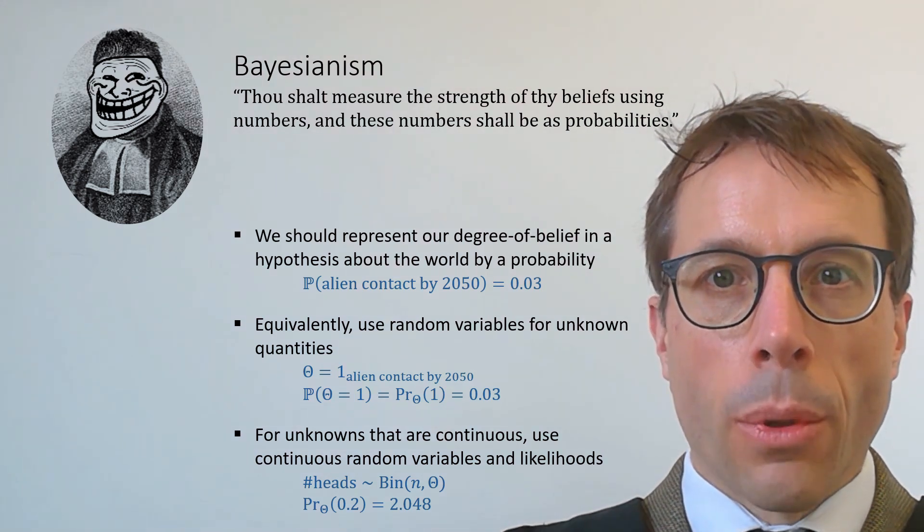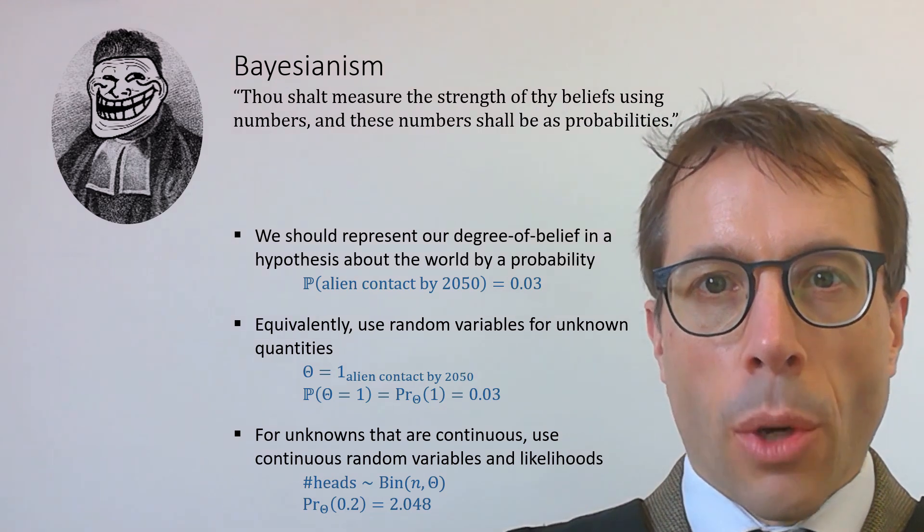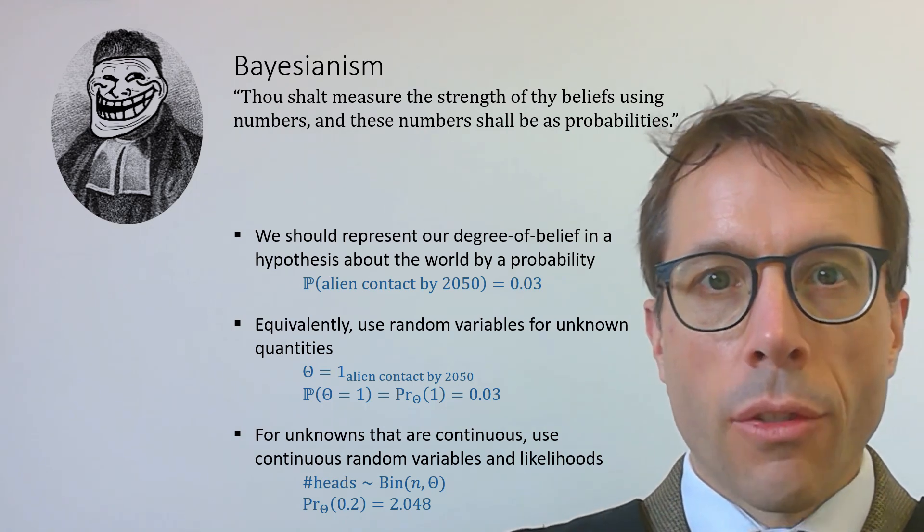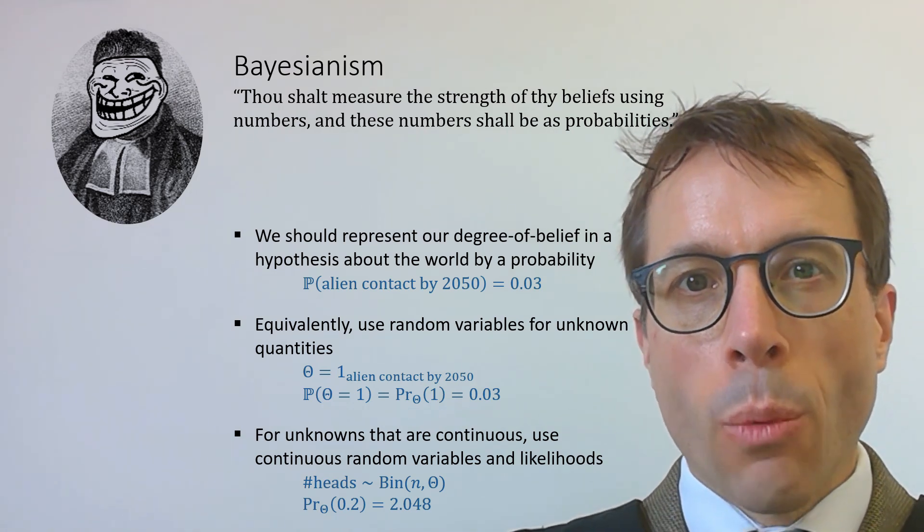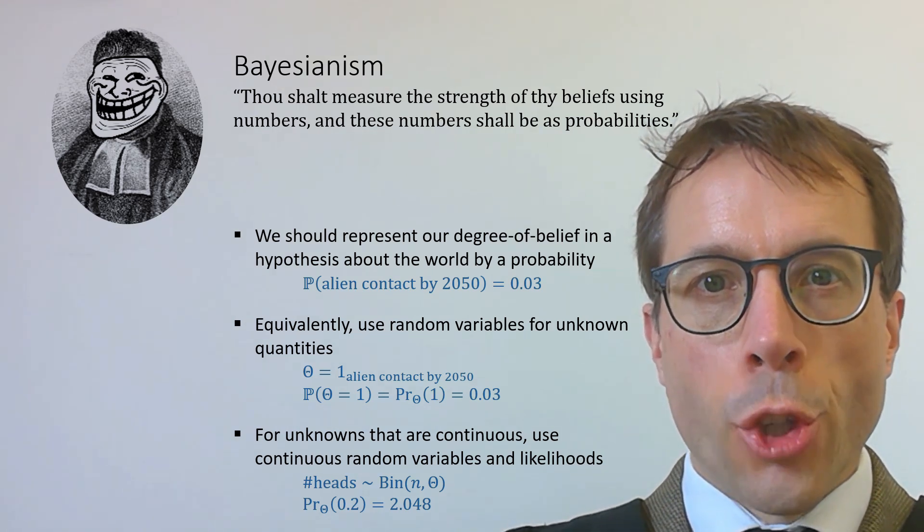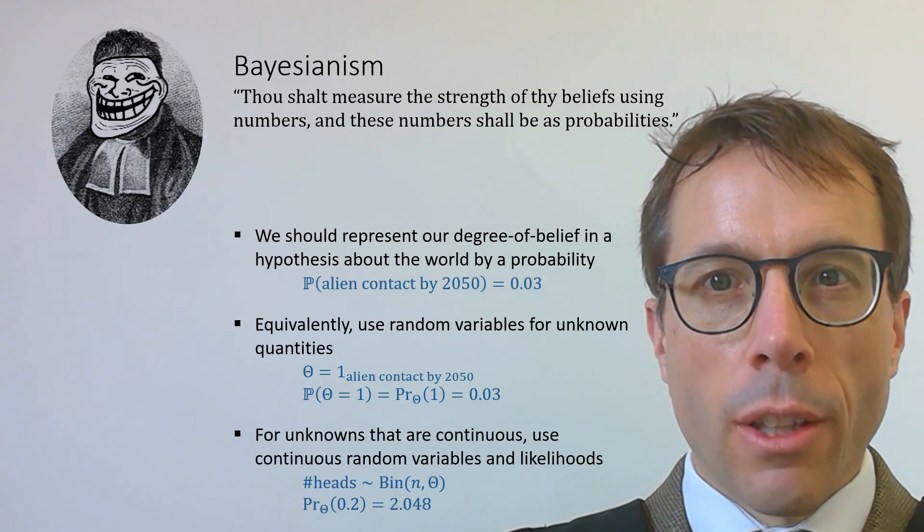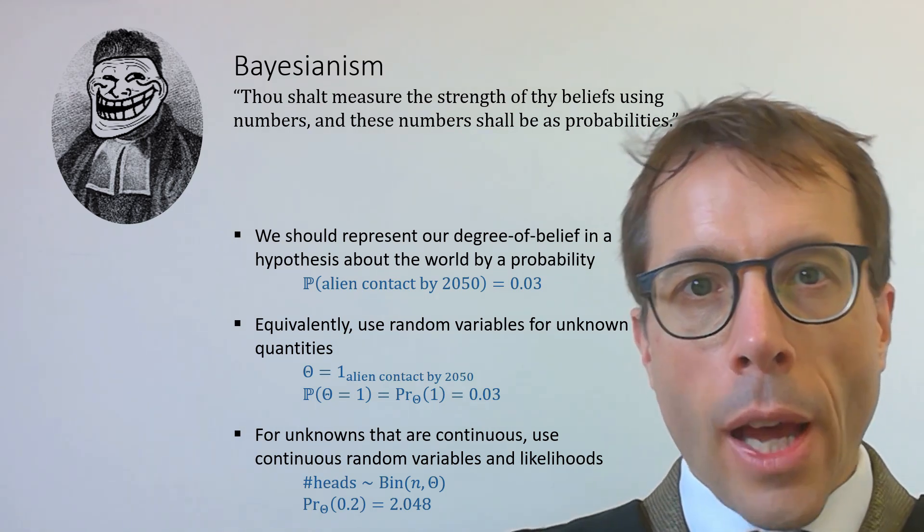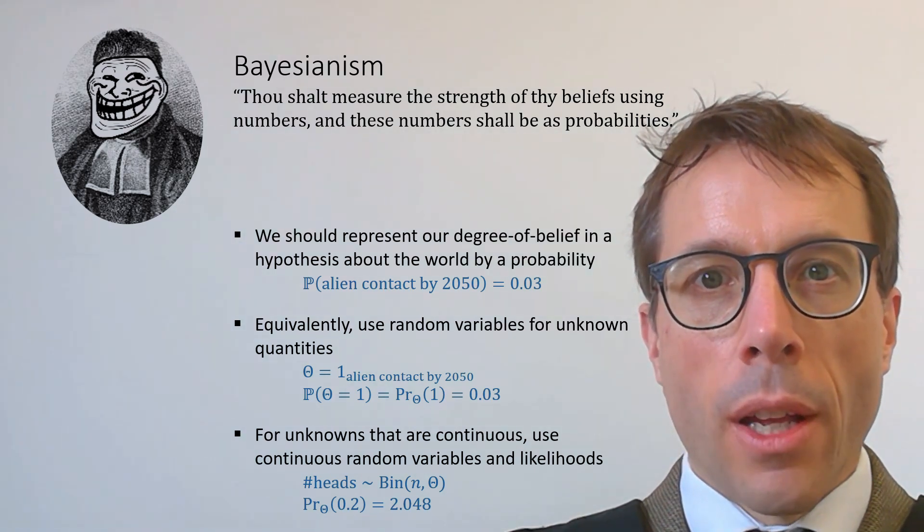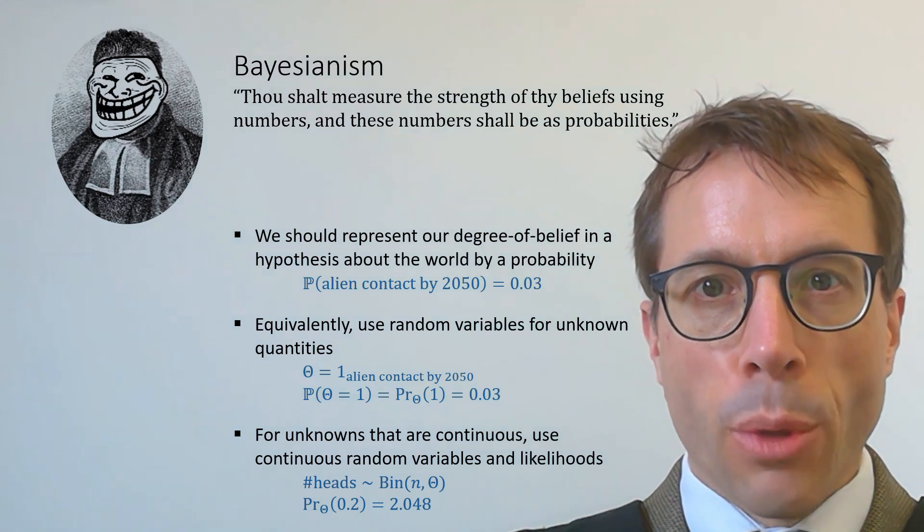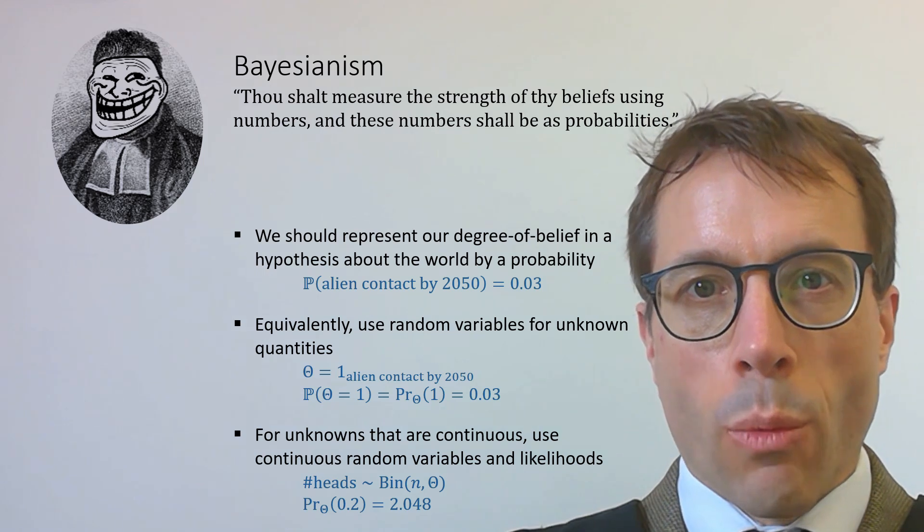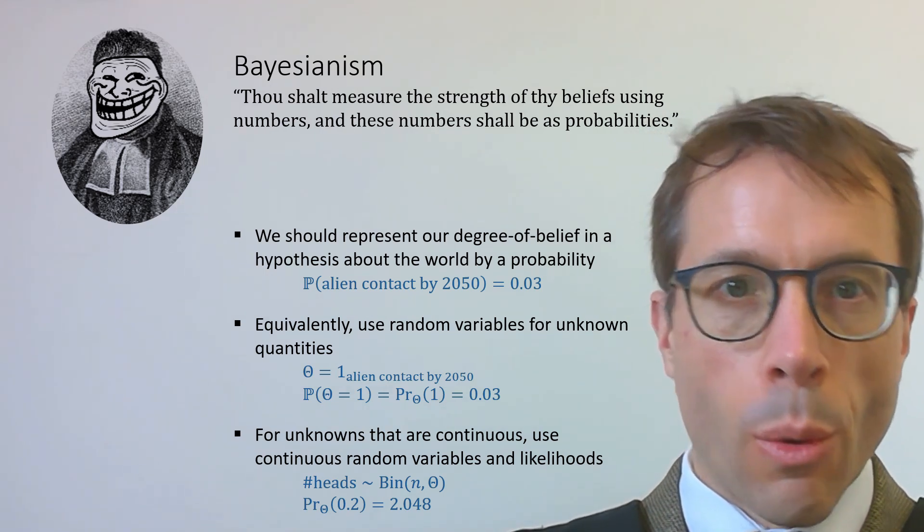Random variables also make it easier to think about hypotheses where there's a continuum. For example, in that coin toss example, let's suppose our probability model for coins is that the number of heads is a binomial random variable with parameters n, the number of tosses, and theta, the probability of heads, and that we're uncertain about theta. The Bayesianist would say, you should measure your degree of belief in any particular value little theta by using a number, and because there's a continuum of possible values of theta, I'll represent degree of belief by the likelihood for this continuous random variable big theta. Likelihoods are allowed to be larger than one, they just have to integrate to one when we integrate over the entire continuum of possible values.